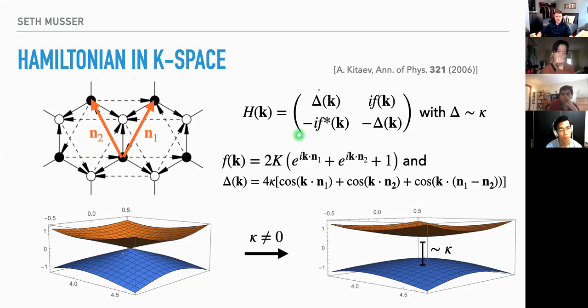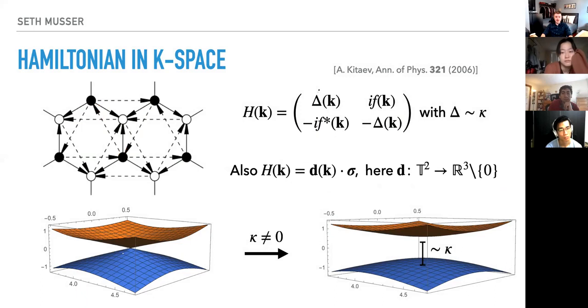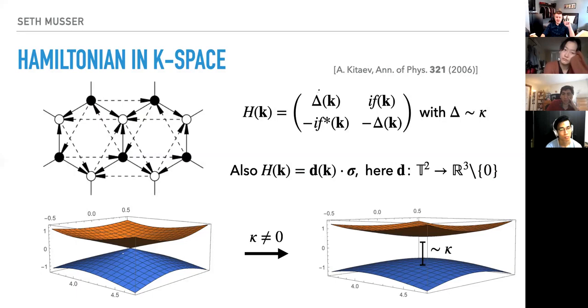In terms of band structure, the next-nearest-neighbor hopping takes our gapless dispersion at the Dirac points and gaps it out with a gap on the order of κ. If we transform this Hamiltonian to k-space, we get a Hamiltonian that looks like the dot product of some vector with Pauli matrices — it's Hermitian and traceless. So we can write H = d⃗·σ⃗, where d⃗ is a vector mapping the Brillouin zone — with periodic boundary conditions, a torus — to ℝ³.